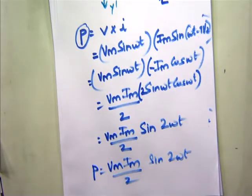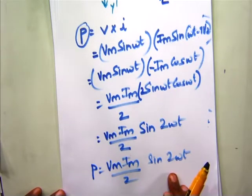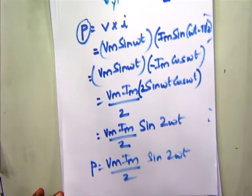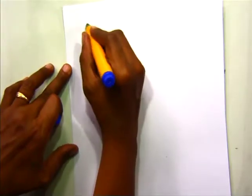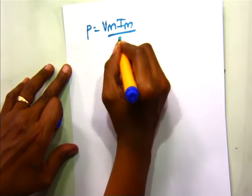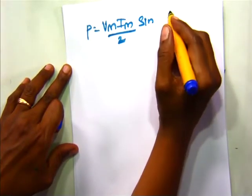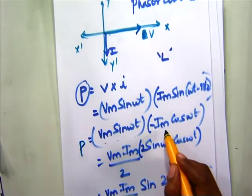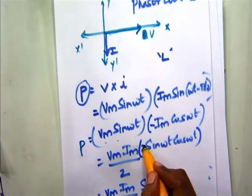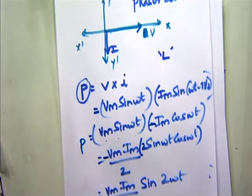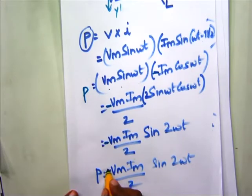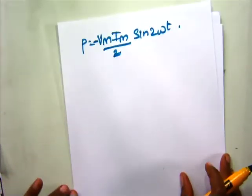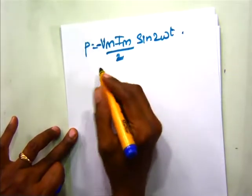We have to find the average value of power consumed by an inductor. The expression is P equals minus Vm Im by 2 into sin of 2 omega t. The average value is found over a half cycle: P average equals 1 upon pi, the integral from 0 to pi of minus Vm Im by 2 into sin of 2 omega t.